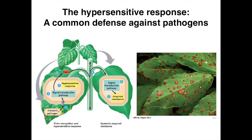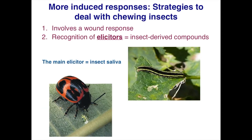When we get the hypersensitive response, it serves as a signal that gets transported throughout the rest of the plant, and hopefully we achieve systemic acquired resistance. When systemic acquired resistance is achieved, there is a general increase in the resistance of the entire plant to a wide range of pathogens, from an increase in defensive compounds produced as a result. The hypersensitive response occurs very quickly — within several hours — whereas systemic acquired resistance takes much longer, like several days.